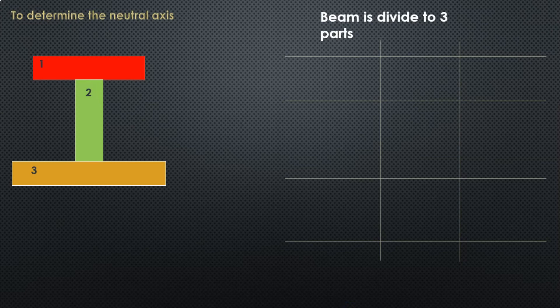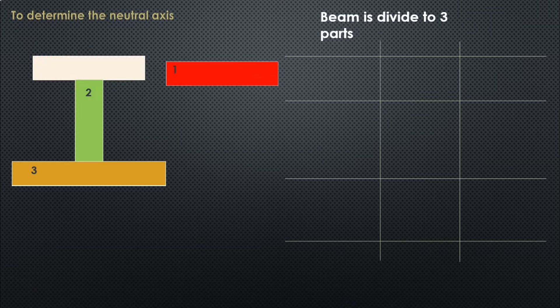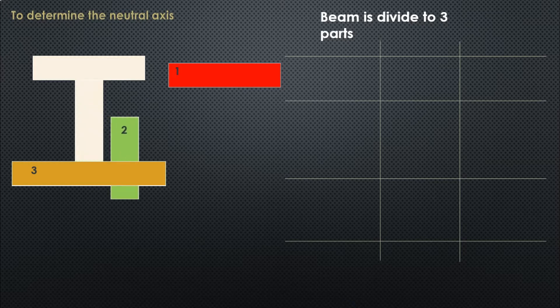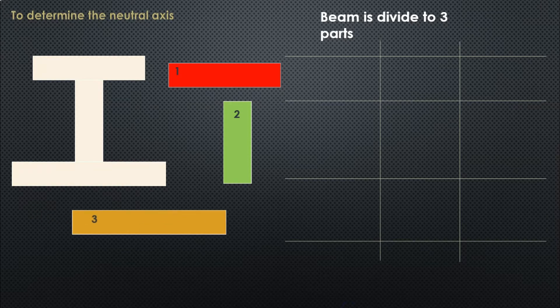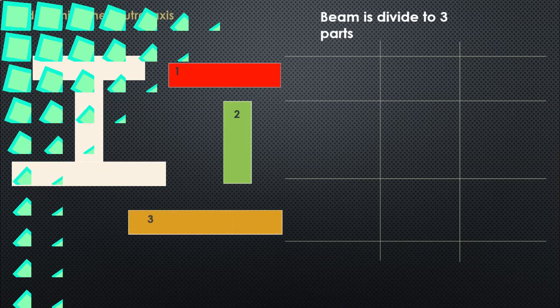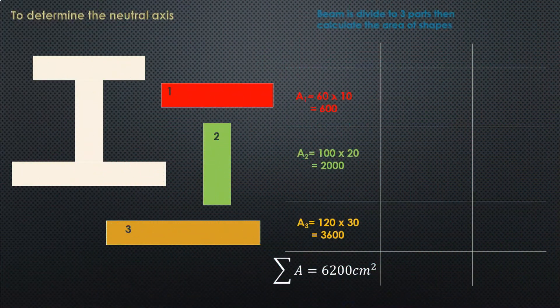The beam is divided into 3 parts: Part 1, Part 2, and Part 3. Now that the beam is divided into 3 parts, we calculate the area of each shape.